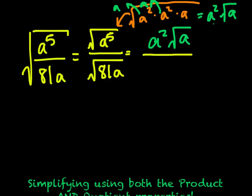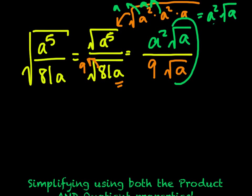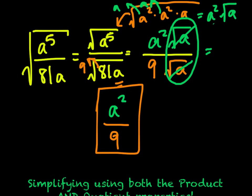On the bottom, the square root of 81 is 9, and the square root of a is left behind because there's no pair for that a. However, looking vertically, we have a square root of a on the top and a square root of a on the bottom — that's essentially multiplying by 1, so we can simplify and take it away. We end up with simply a squared divided by 9 as our final answer.